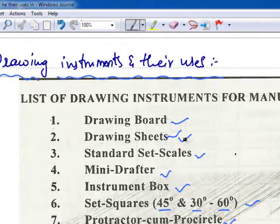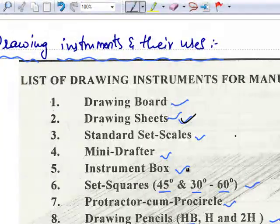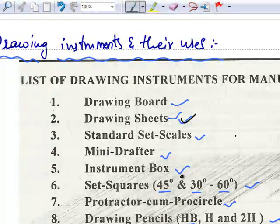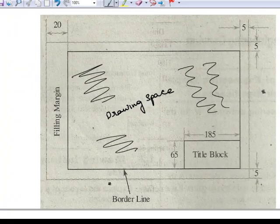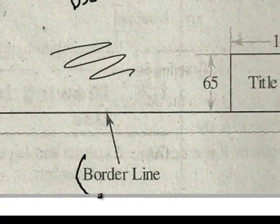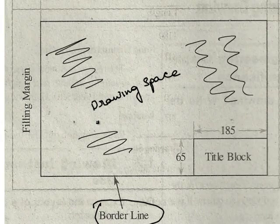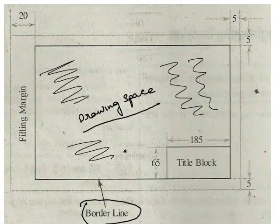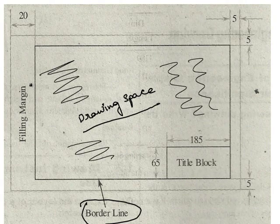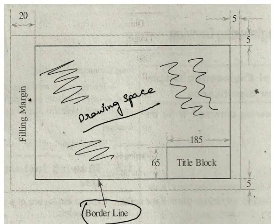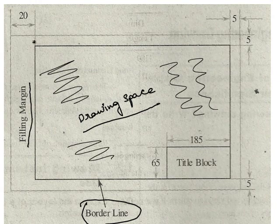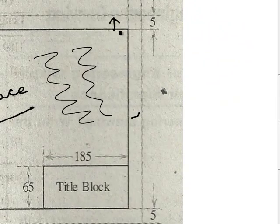Now let's discuss about the drawing sheets. Engineering students generally prefer A2 or A3 size drawing sheets for classwork. A drawing sheet generally consists of border lines. These lines are drawn in order to obtain a perfect rectangular drawing space where all the drafting can be made. At the left hand edge of the sheet, a filing margin of 20 mm width is drawn. At the right hand, top and bottom, a 5 mm width of margin can be drawn.